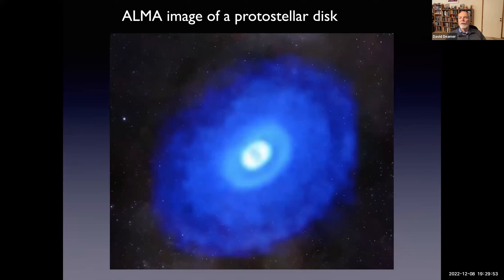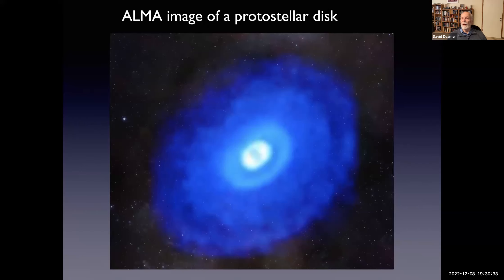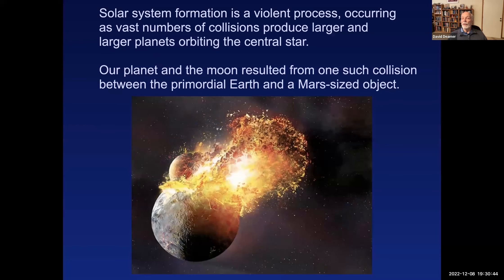There is a telescope in the Atacama Desert in Chile called ALMA, and this is one of the first images of a solar system being formed — a proto-stellar disk. You can see the disk begin to accrete by gravitational energy into planets; this area around the star is going to become a new planet. This process takes tens of millions of years, but this is really what our solar system looked like four and a half billion years ago.